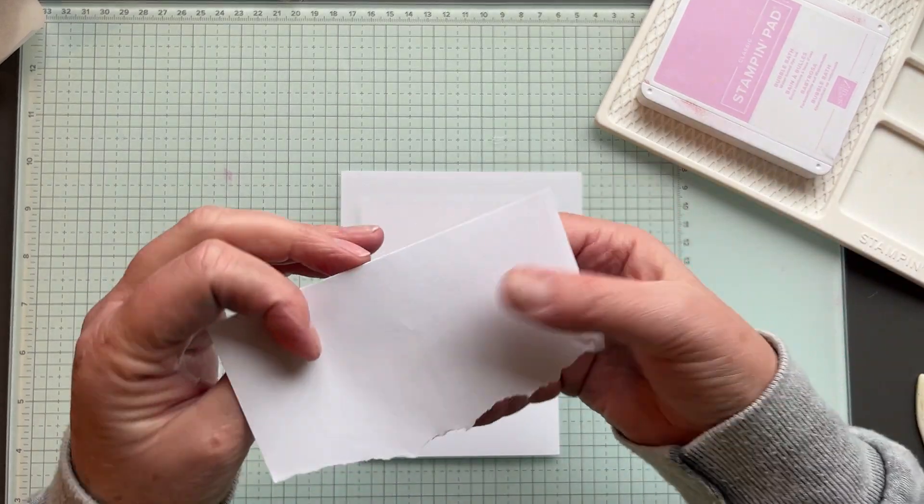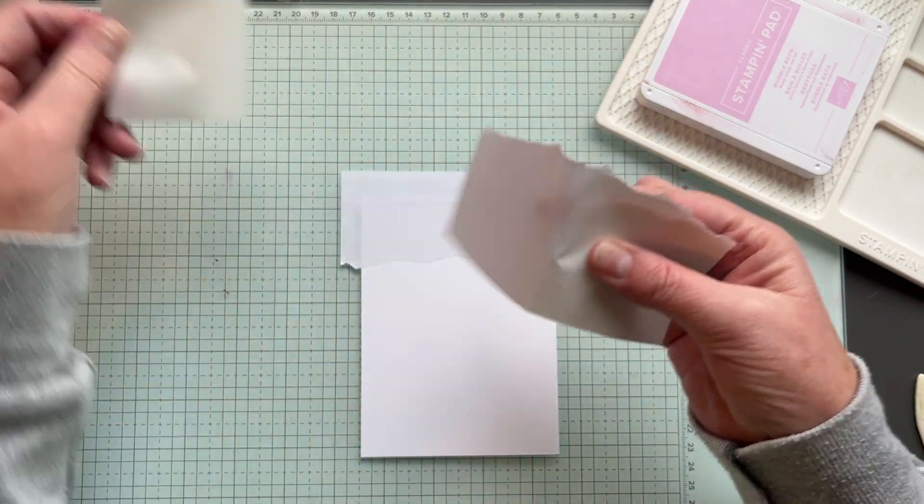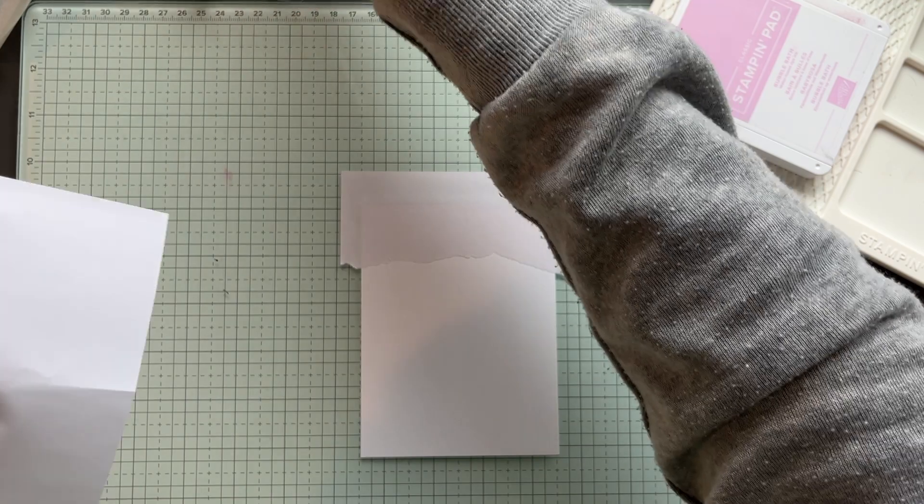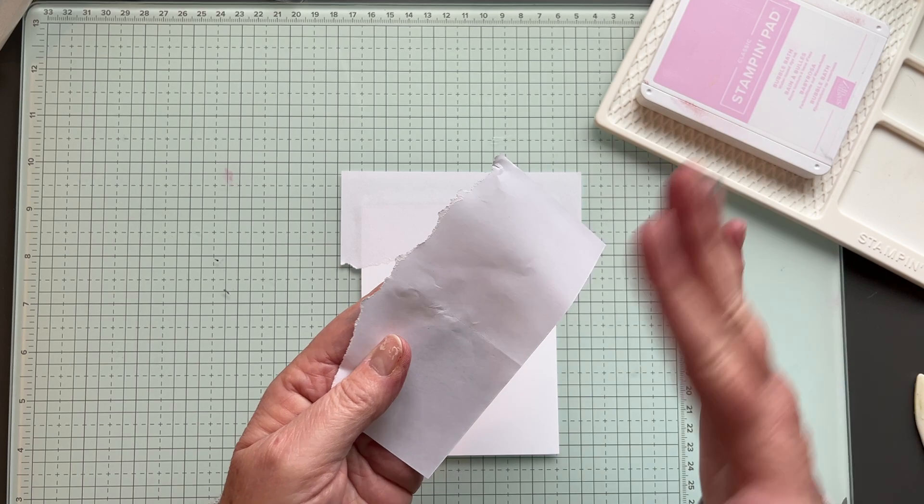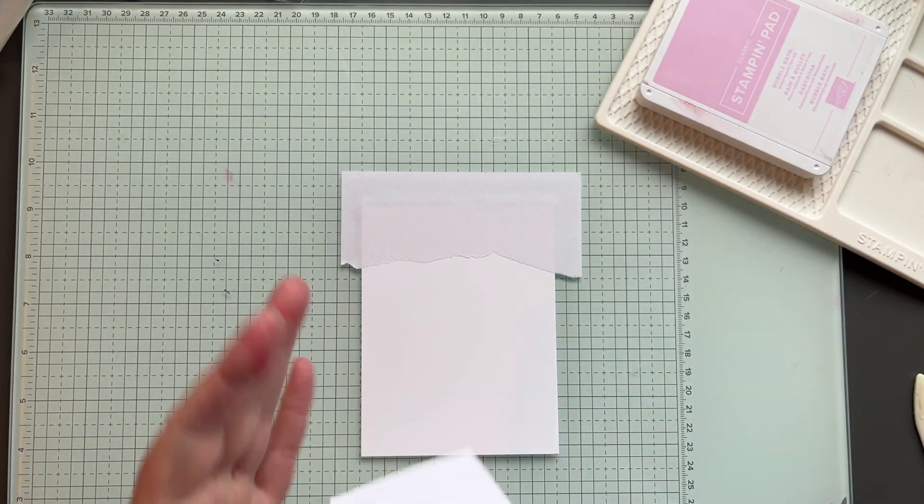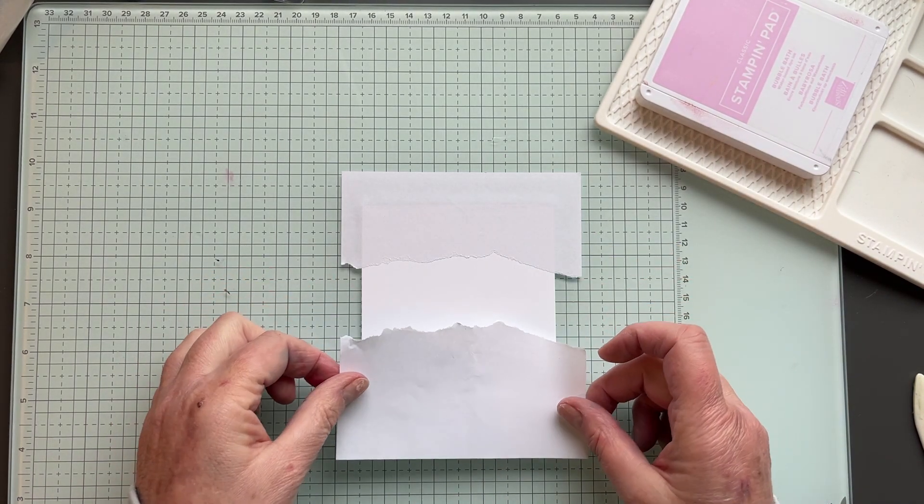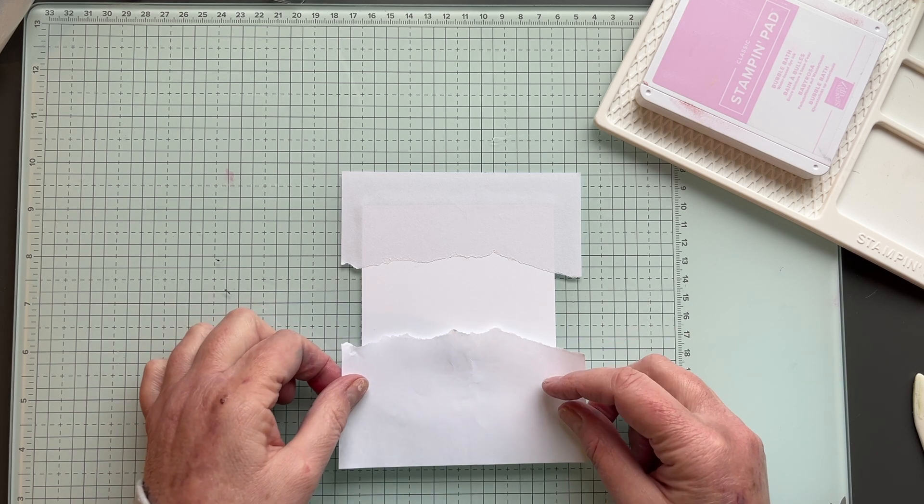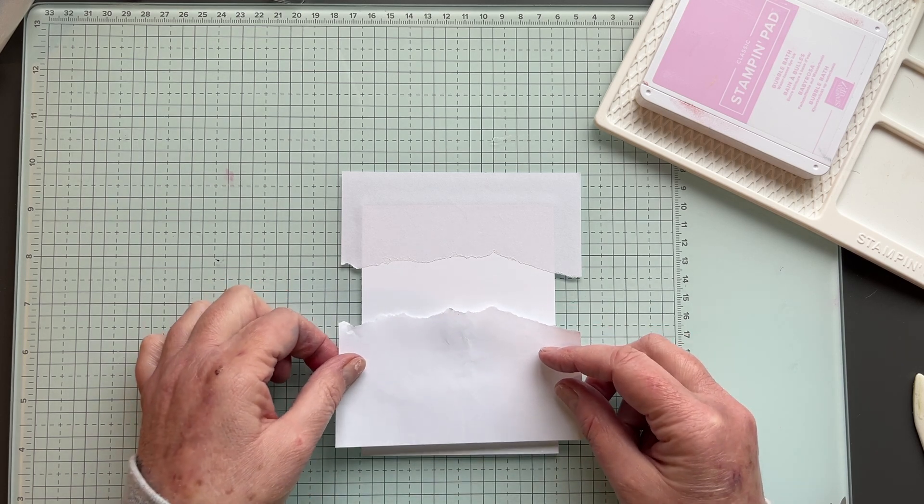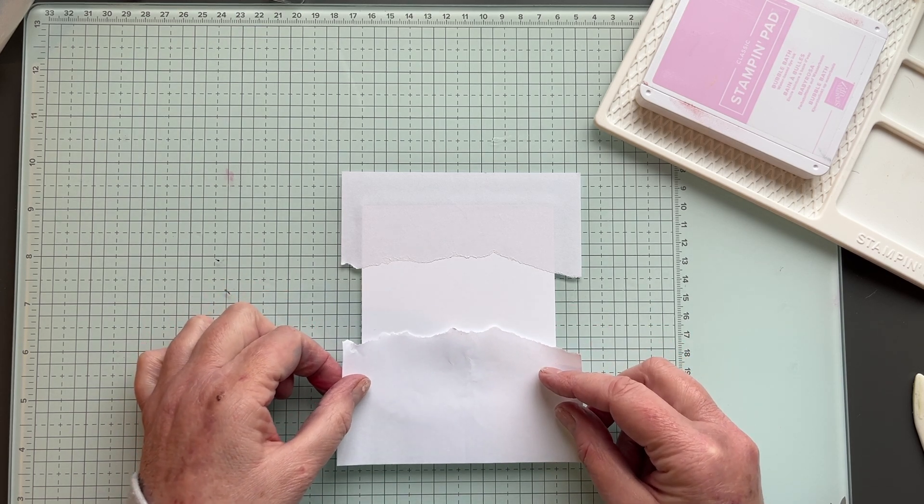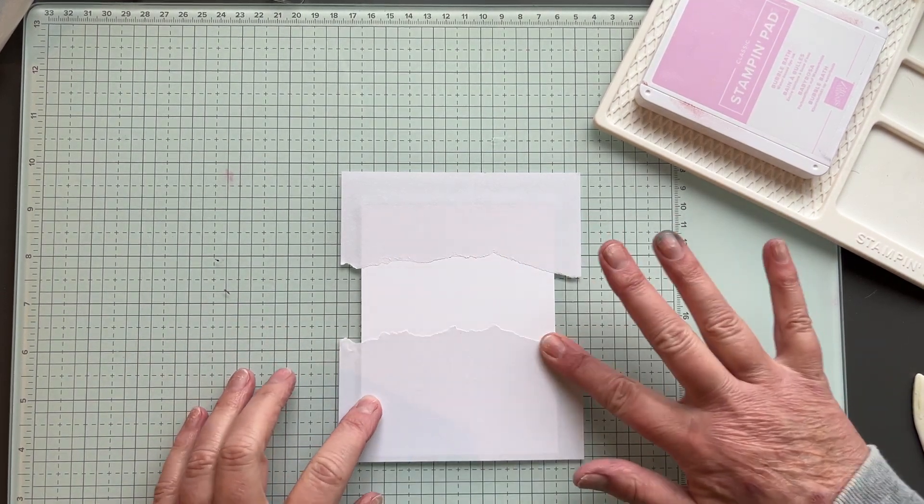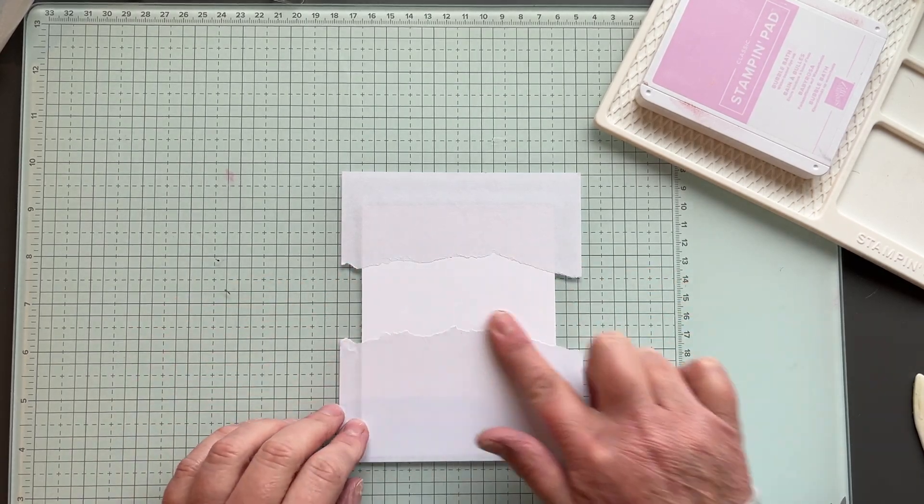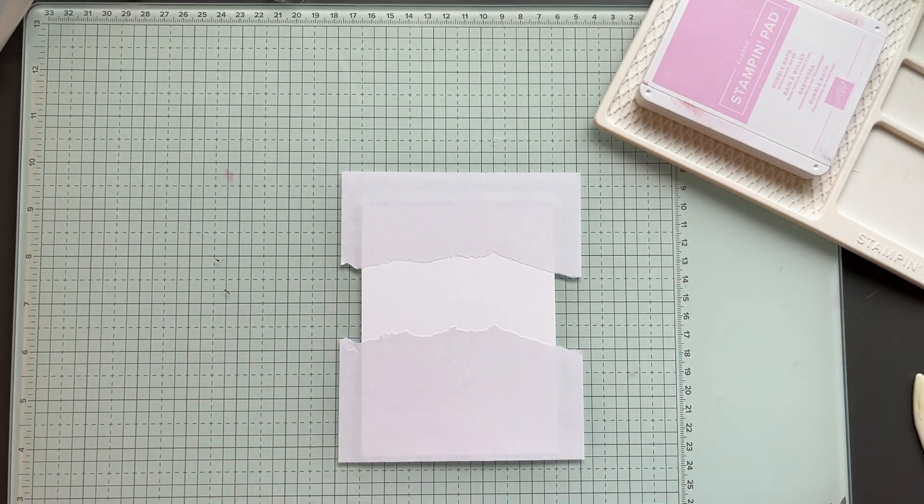And then do the same thing with the other piece. Sometimes it's a little stickier than you want it to be. You don't want it to stick to your cardstock. And I'm just going to lay it down, just trying to decide how thick I want it. There we go. Kind of like that. And then just rub it with your fingers, because you want these torn edges flat so you don't get any ink under them.